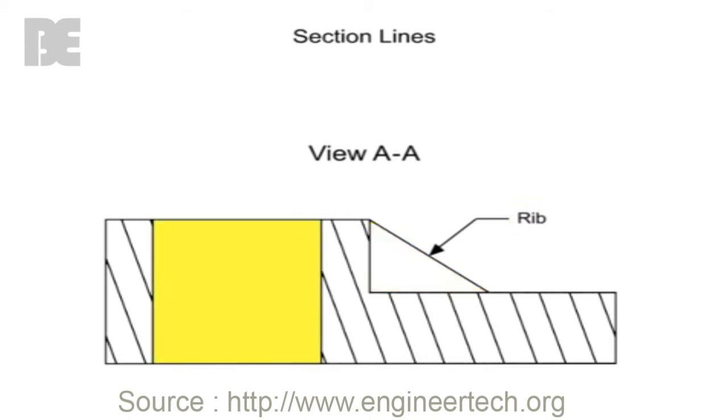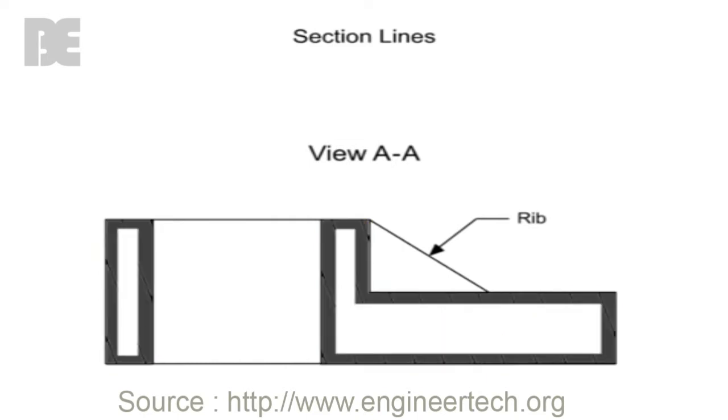Additionally, the hole is not given section lines because the hole is empty of material. Additionally, if a drawing is clearly illustrated, section lines are sometimes only drawn along the visible lines along the exterior of the sections. Large parts are often drawn with outline sections.